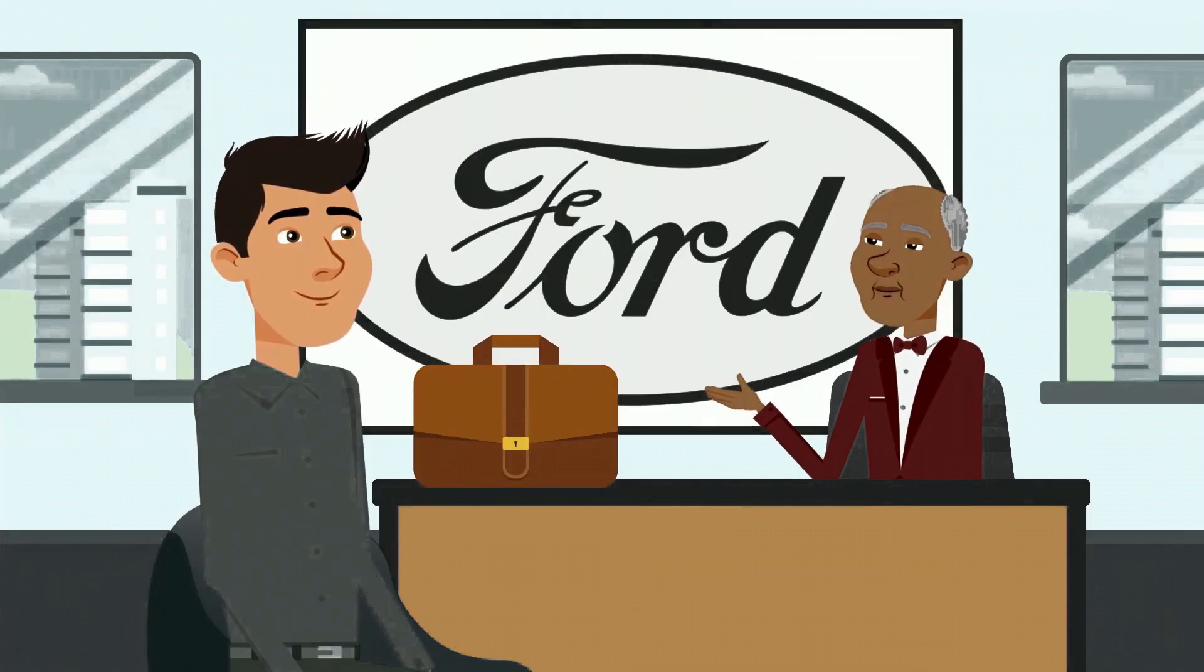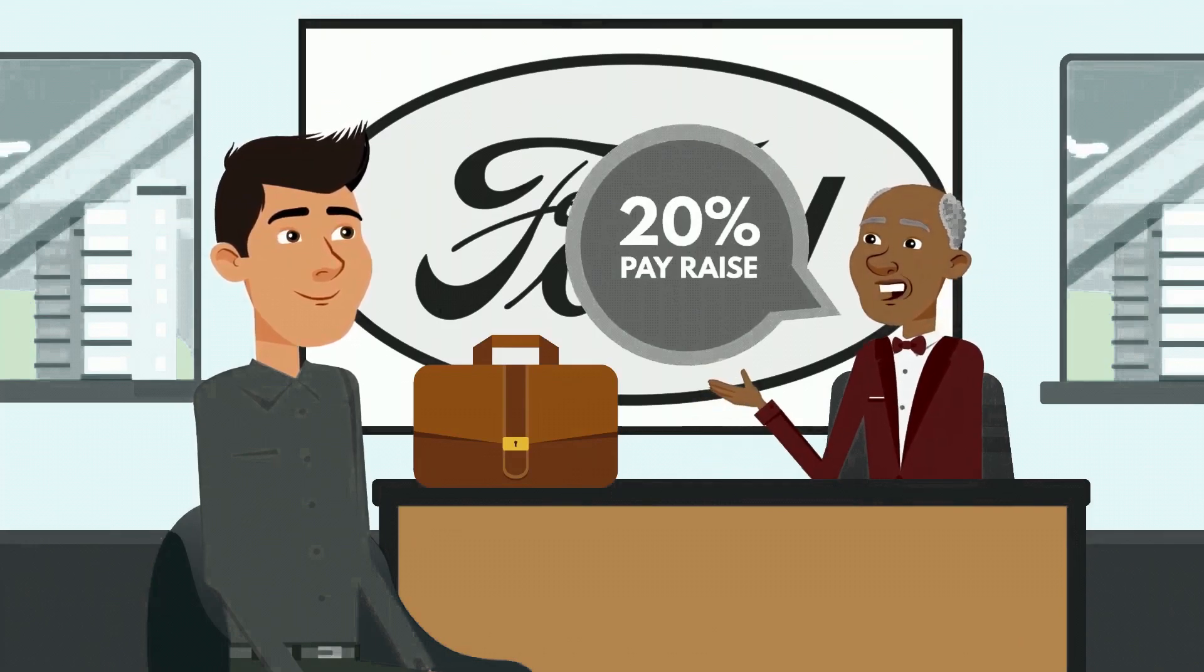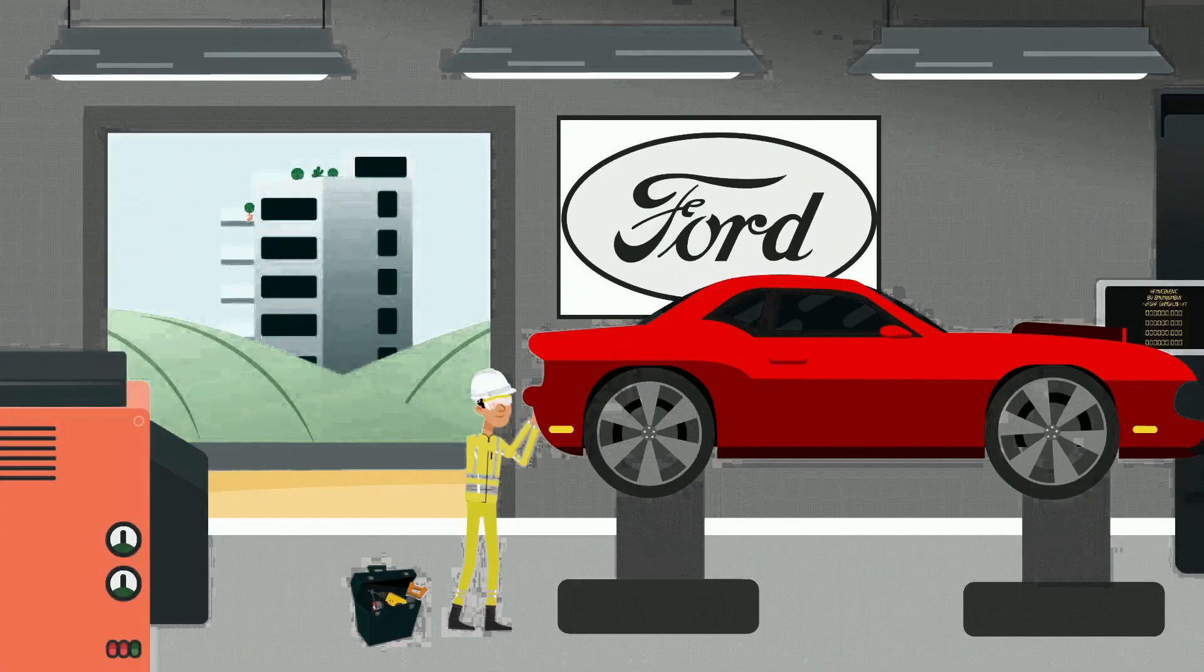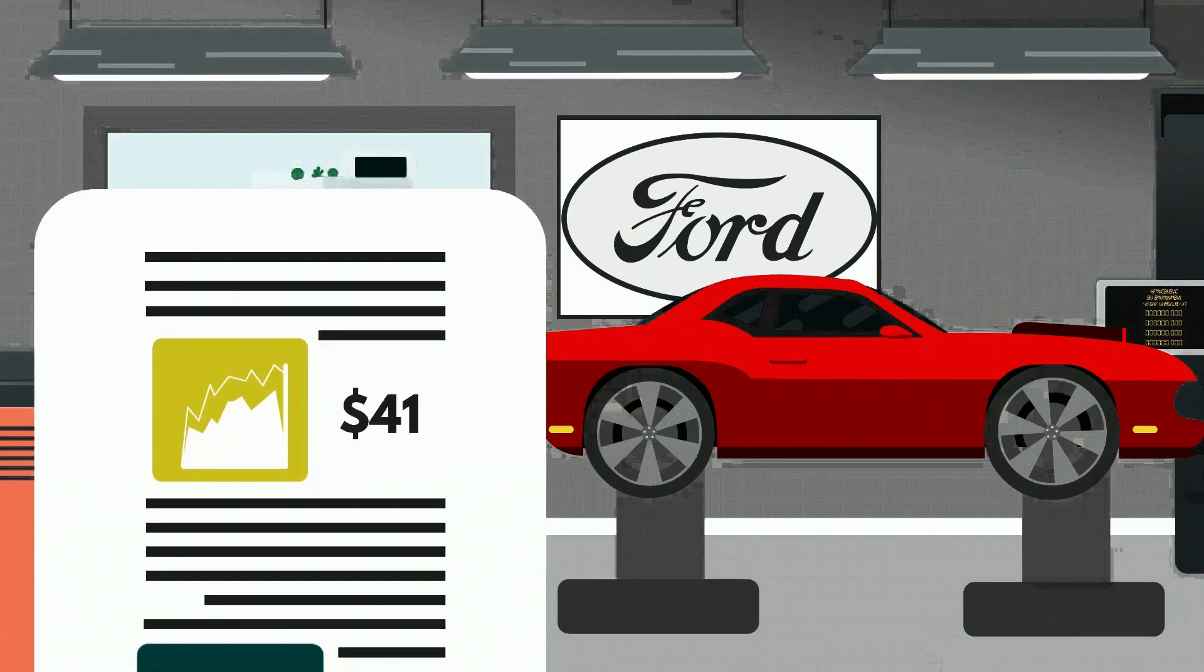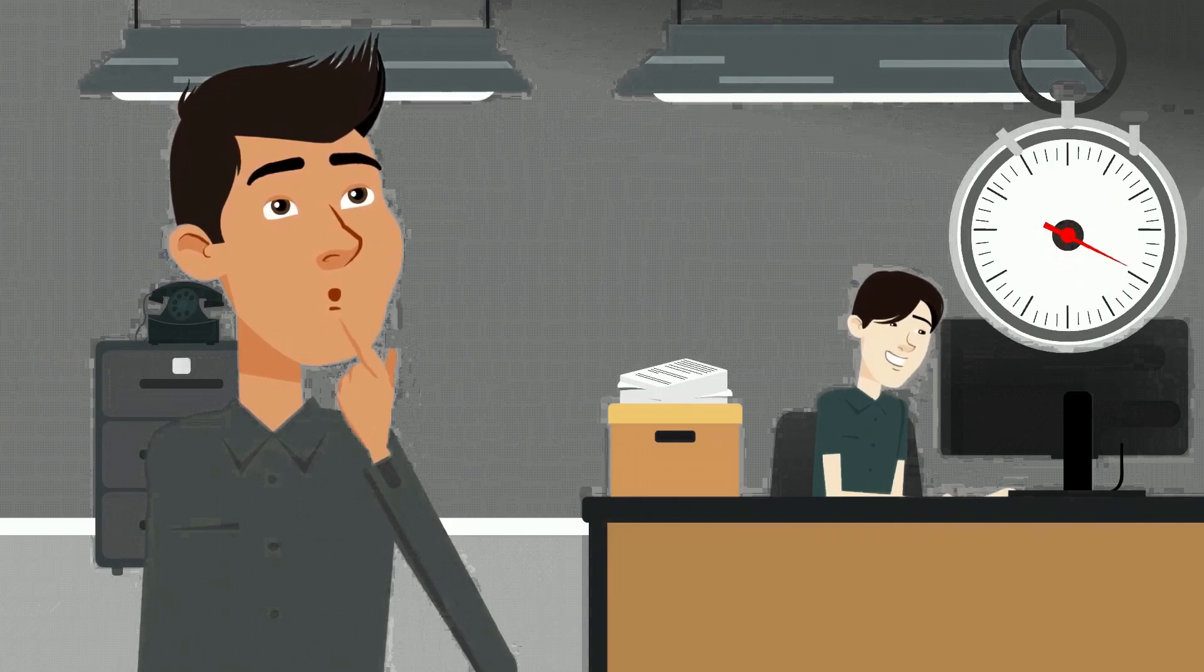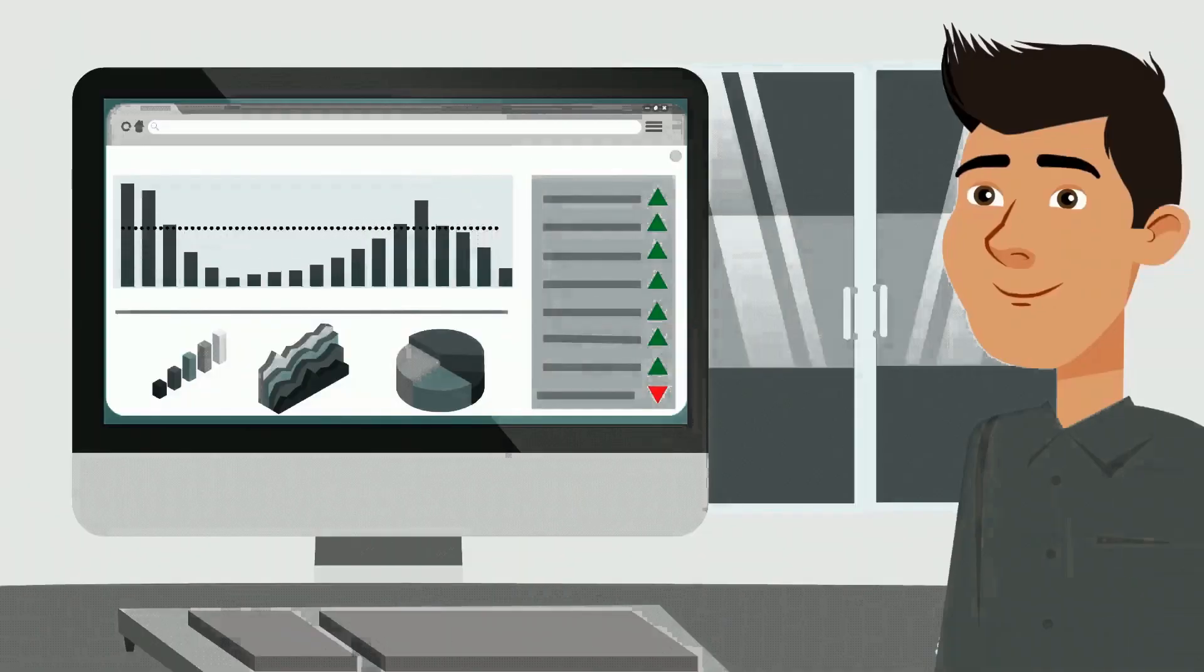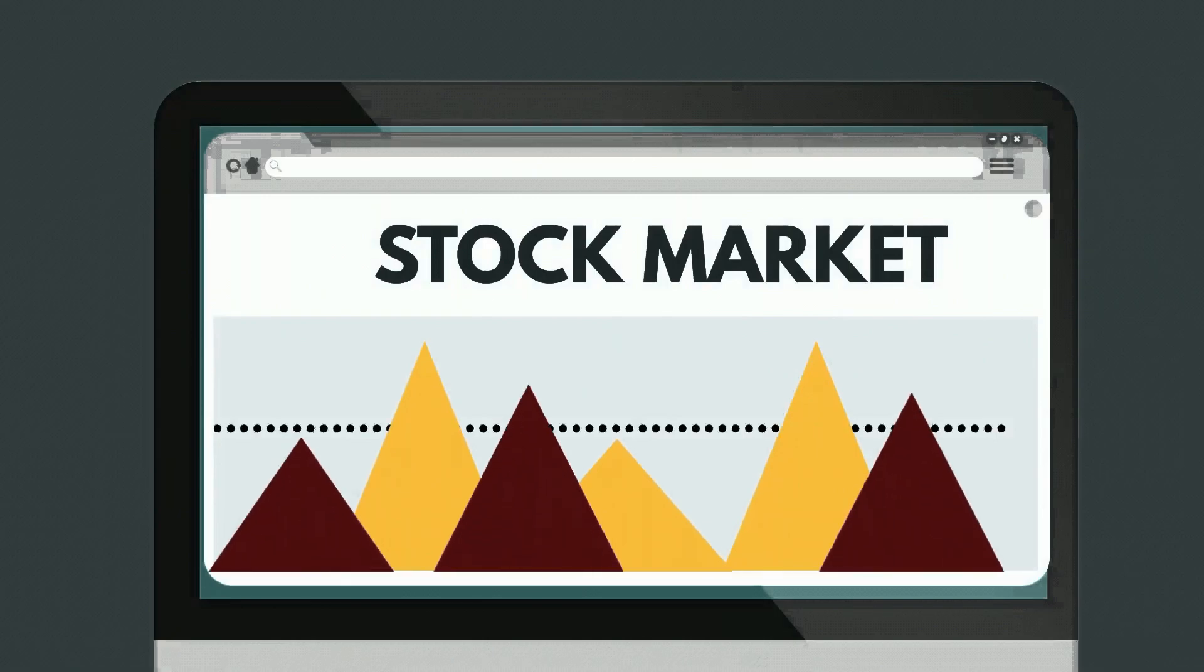Tom also began to understand the importance of diversification. He didn't put all his eggs in one basket. Instead, he spread his investments across different sectors and industries. This wasn't just about reducing risk. It was about maximizing opportunities. Different sectors react differently to market conditions, and by diversifying, Tom ensured that he was well positioned to capitalize on market movements. But perhaps the most crucial lesson Tom learned during this period was about discipline. The market had its ups and downs, and there were times when Tom's investments didn't perform as expected. It was tempting to sell off stocks at the first sign of trouble, but Tom resisted. He knew that the key to successful investing was to stay the course, to trust in the fundamental analysis and long-term strategy.